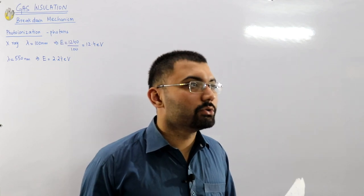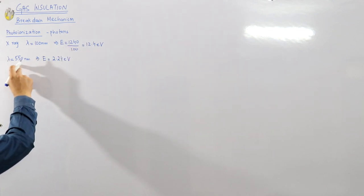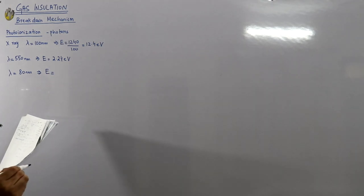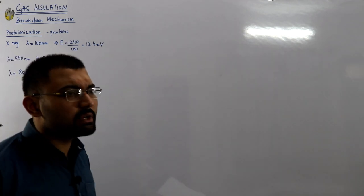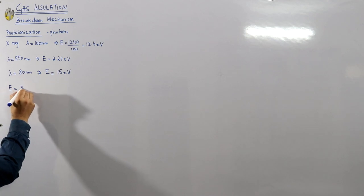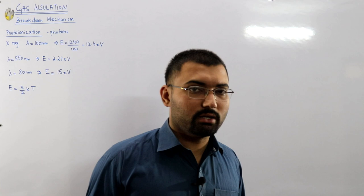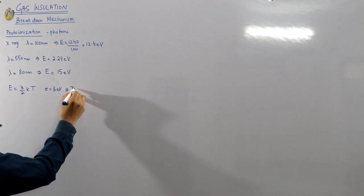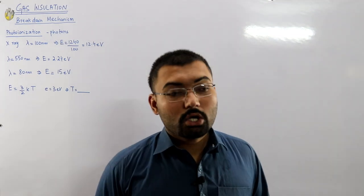X-rays can ionize, but not enough x-rays reach the Earth's surface due to the ozone layer. In the ultraviolet region, at lambda of 80 nanometers, the photon energy equals 1240 divided by 80, which is about 15 electron volts. For thermal radiation, E equals (3/2)kT, and achieving even 3 electron volts would require thousands of degrees centigrade — not physically possible on Earth.